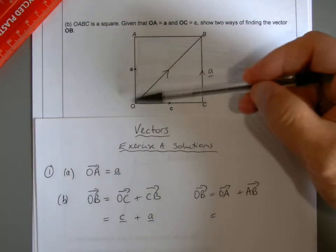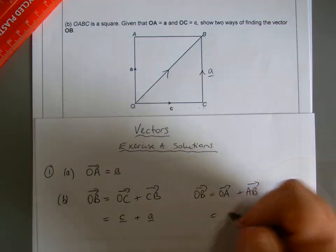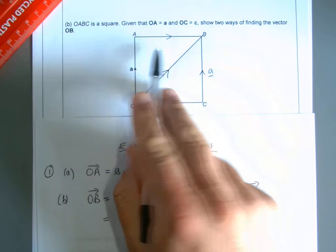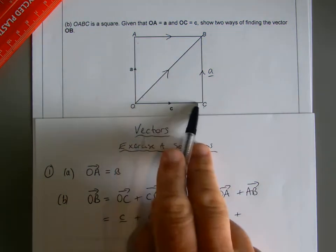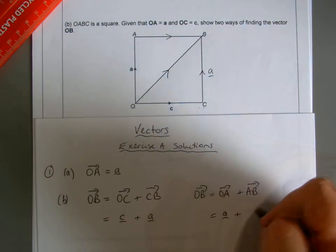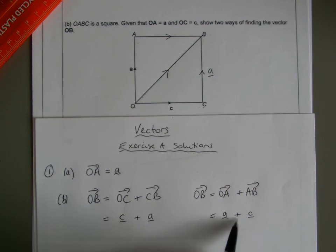Of course, we know OA is little a. AB we're not given, however you should notice that it's parallel to and equal in length to this side, so we've got little c there for that.